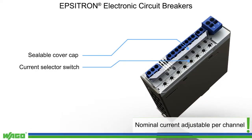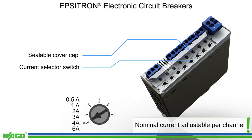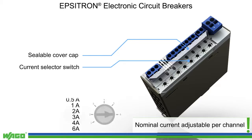All models feature a six-position current selector switch per channel for setting the respective trip current. The following variants are available.